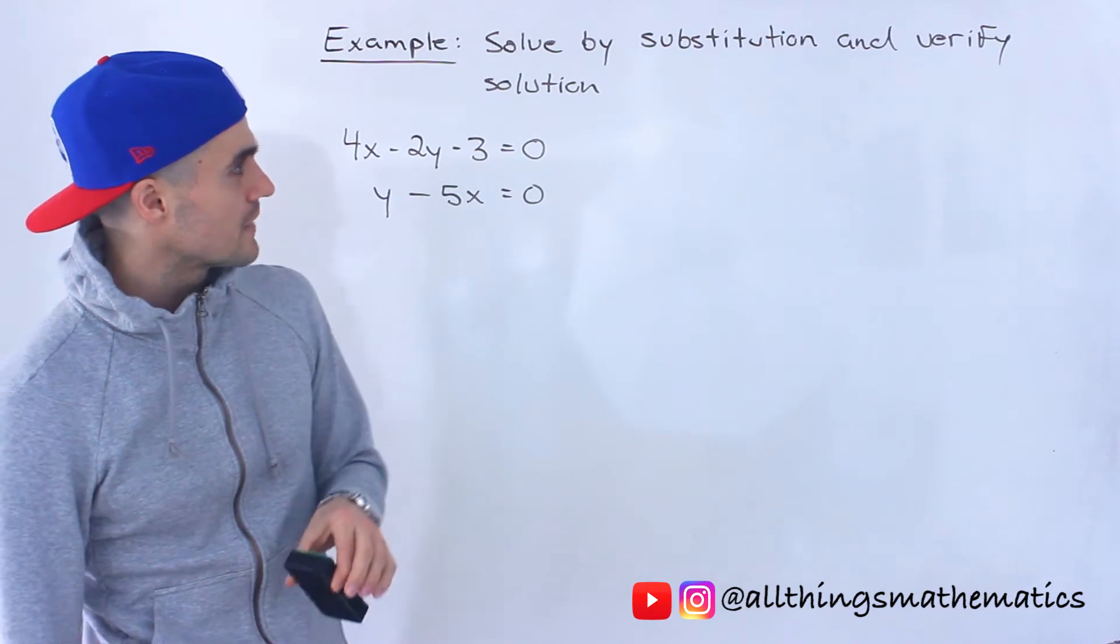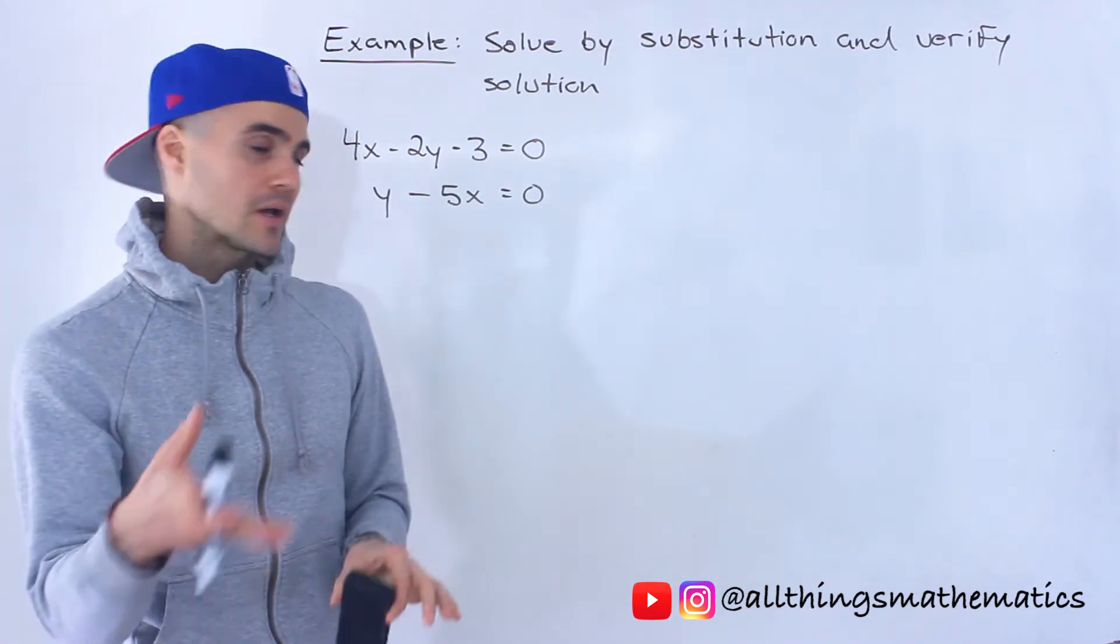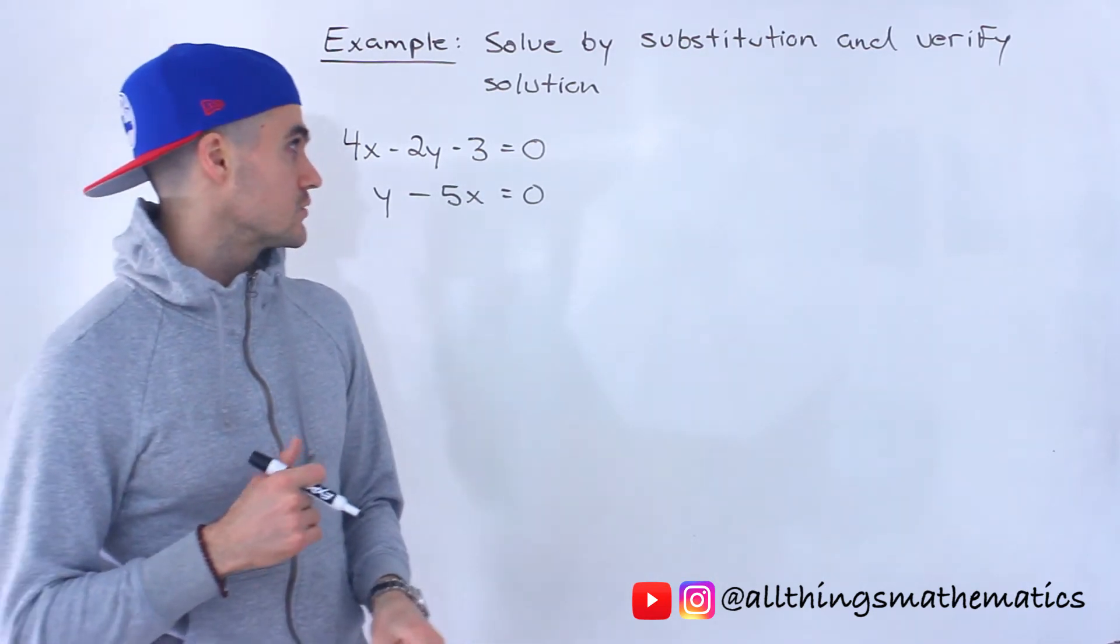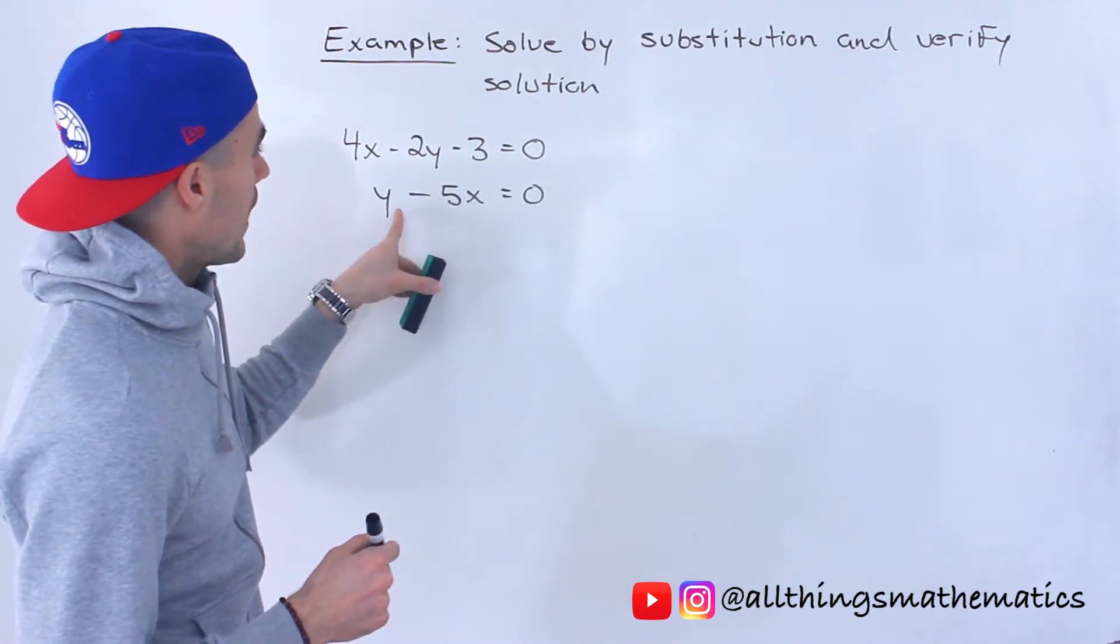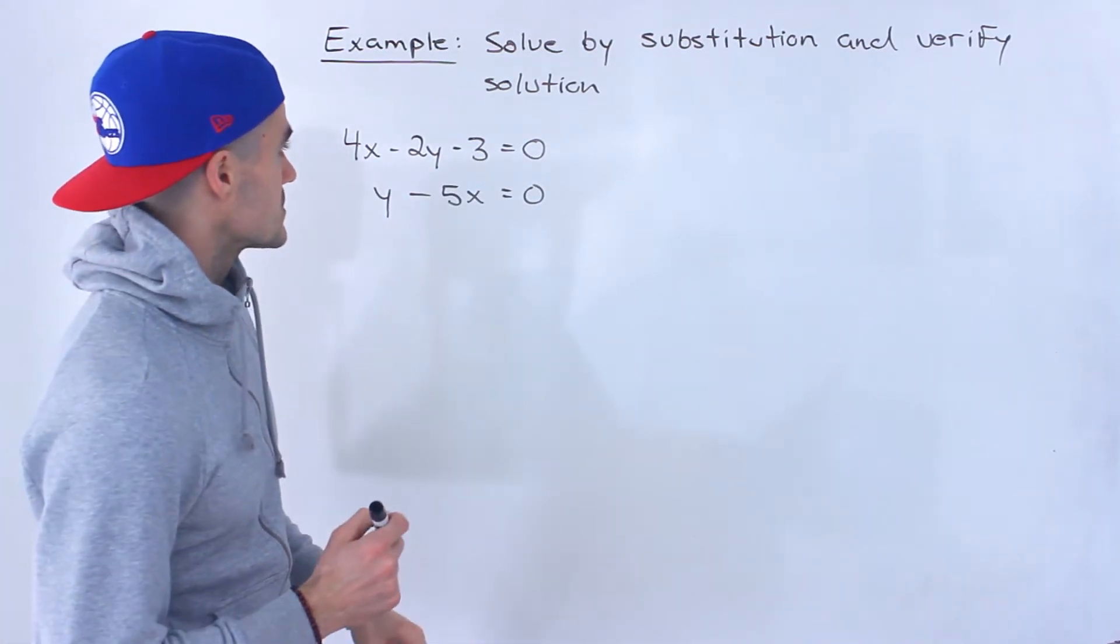We have to solve this system of equations by substitution and then verify our solution. So we got 4x minus 2y minus 3 equals 0, and y minus 5x equals 0.